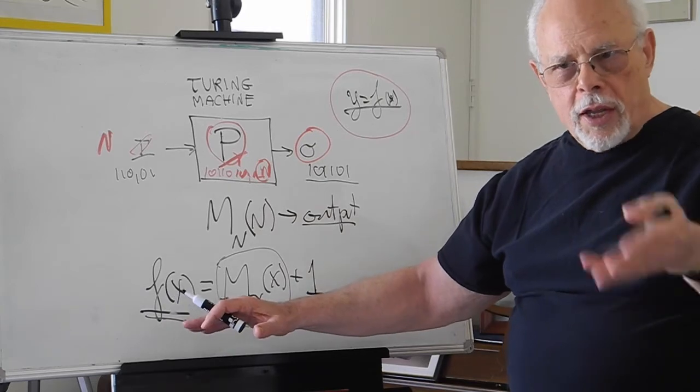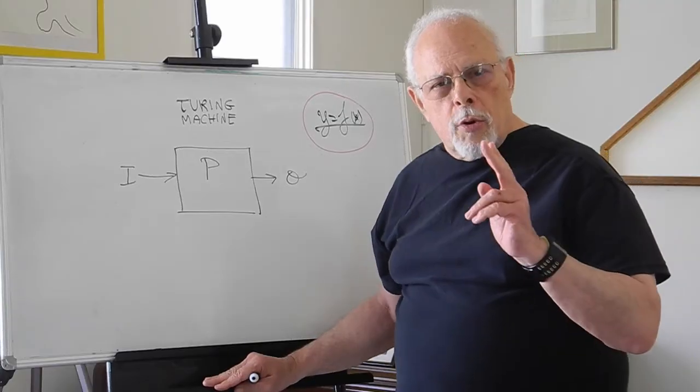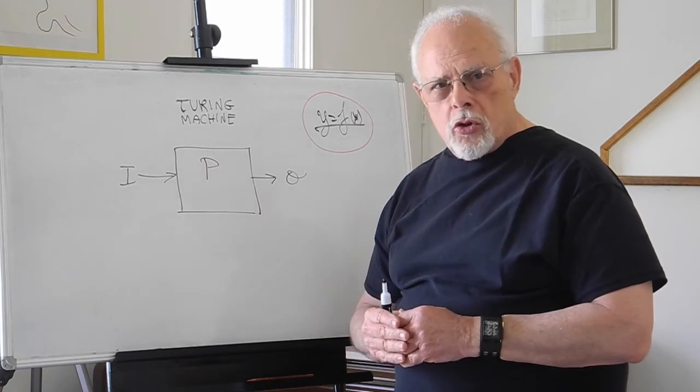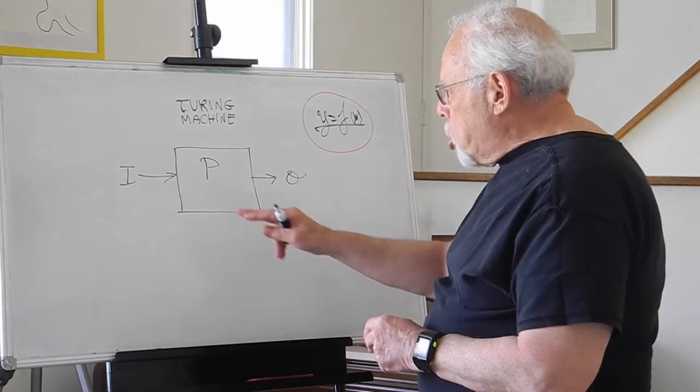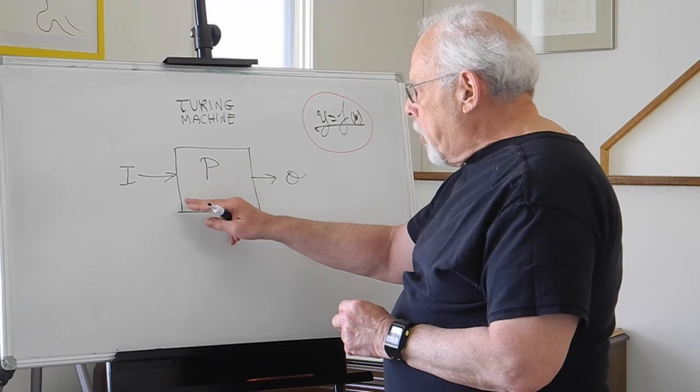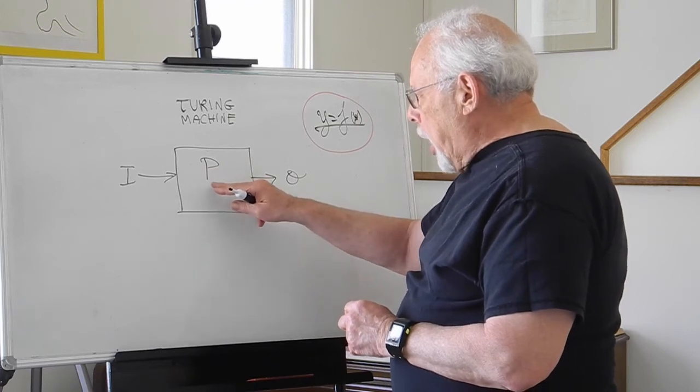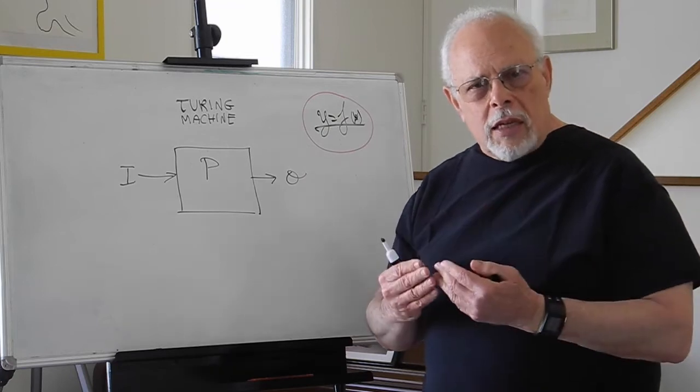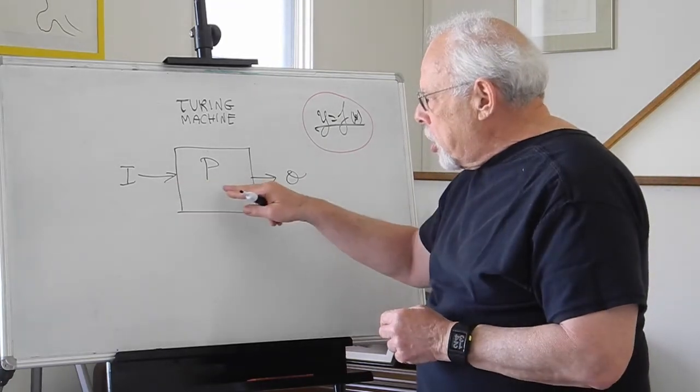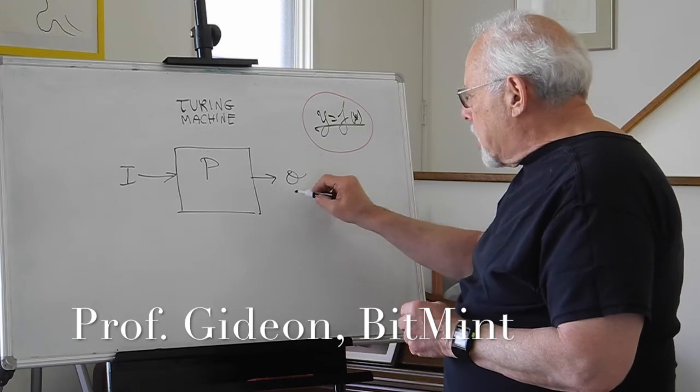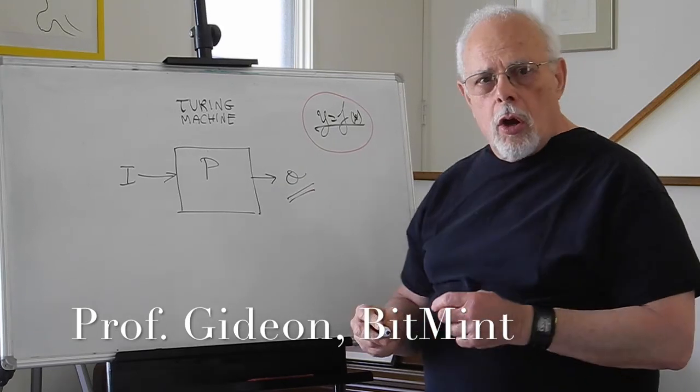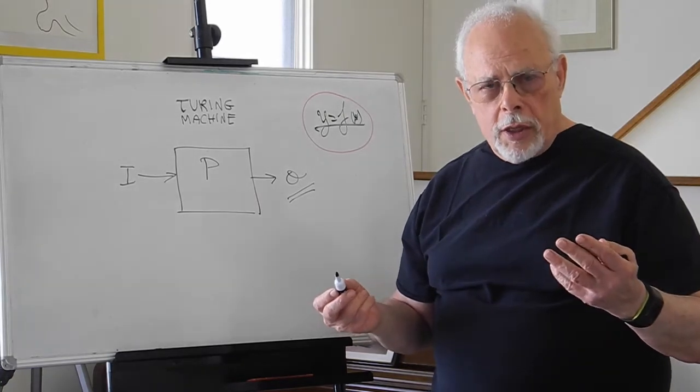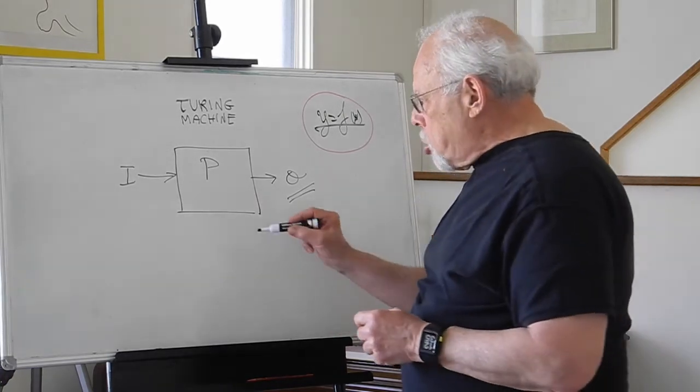That's a never category. The most famous never machine that Turing has shown relates to the question of, can we build a machine that will tell us if a particular combination will result with an output, or will crank forever without giving an output?